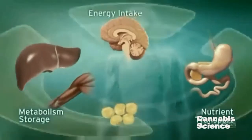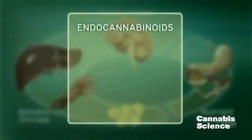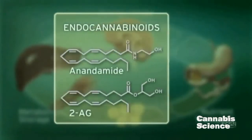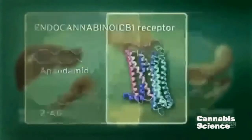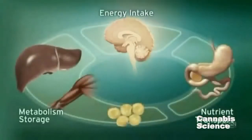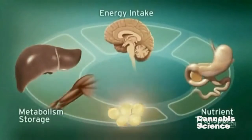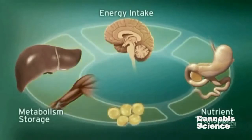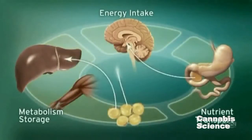The ECS regulates these processes through endogenous ligands, such as anandamide and 2-arachidonylglycerol, and the CB1 receptor. CB1 receptors are located in the brain, digestive tract, muscle and adipose tissue. Integration of these central and peripheral ECS components is achieved through neuronal and hormonal signaling.